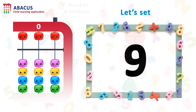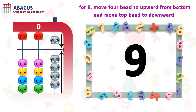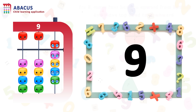Let's see one more example. Here we have the number 9. So let's set 9. For 9, we have to move 4 beads upward from the bottom and move the top bead downward from the top on rod 1. Here we got the number 9. It's easy, right? Yes.